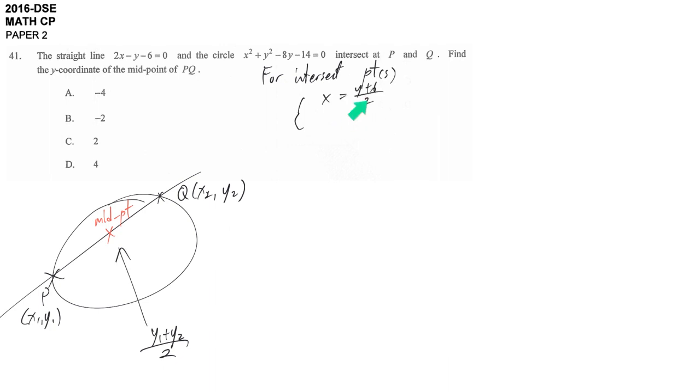We make x be the subject. It's because I want to substitute inside the circle and make y be the only variable. So that's why we make x be the subject this time.